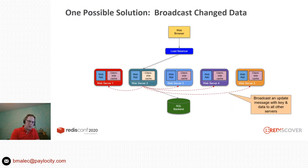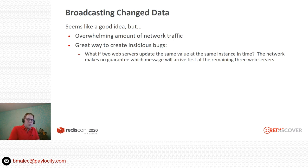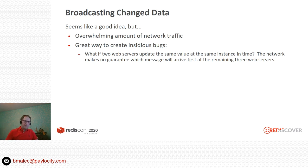If a request goes to any of those other web servers, it's going to return the wrong value. One solution I'm somewhat familiar with — because I've seen other companies try it — is to just broadcast an update: if web server 2 receives the update, broadcast the key and value to the rest of the web servers and say, here's the key that changed, here's the new value, put it in your client-side cache. But it turns out that really isn't a good solution. Every time I've seen this approach used, it's always flooded the network with synchronization traffic.